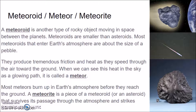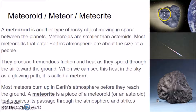Next we need to talk about meteoroids, meteors, and meteorites. Three names for the same object — it just depends on where it is. A meteoroid is another type of rocky object moving in space between the planets. Meteoroids are smaller than asteroids, so they're chunks of rock but smaller than asteroids.